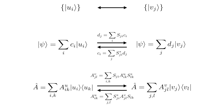Putting everything together, we have found that transforming from one basis u to another basis v requires the calculation of the overlap matrix S_ji between the two bases. Once we have this overlap matrix, we can use it to transform states from the u basis to the v basis, or we can use its conjugate to transform states in the reverse order from the v basis to the u basis. Similarly, we use the overlap matrix and its conjugate to transform operators from u to v, or from v to u.